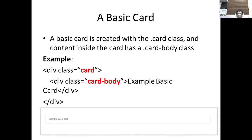So how do we create a basic card? A basic card is created with the card class, and content inside the card has a card-body class. So the basic card is: we have a division with class equals card, and inside this we have a division with class card-body. We can then place the contents of the card inside the card-body.